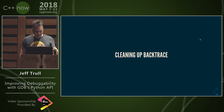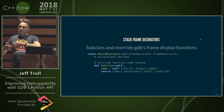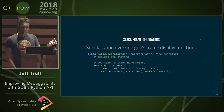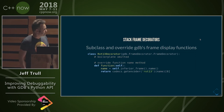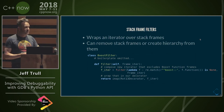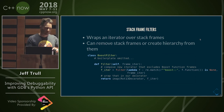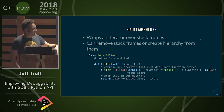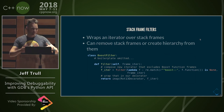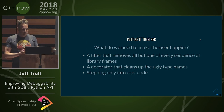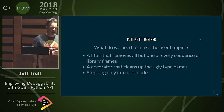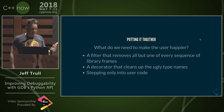The backtrace is still really ugly, but we want to clean that up. There are a couple of things we can use for that purpose: frame decorators and frame filters. Frame decorators allow us to take each frame in the backtrace and modify it in any way we want — for example, this code does a rot13 on the function name. A frame filter can be used to omit frames you're not interested in, or create a hierarchy; this one removes anything in boost. What we really want is a filter that removes all but one of every sequence of library frames, a decorator that cleans up ugly type names using aliases instead of fully expanded templates, and steps that only go into user code.